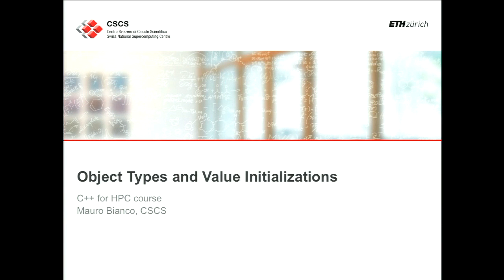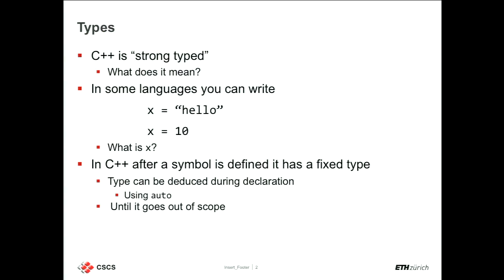C++11 introduced new ways of initializing values, but it's always been quite tricky how values are initialized in C++. We need to start a little bit earlier than that. C++ is called a strongly typed language. It means that every symbol at every given point in time during the execution of the program has a type associated to it — either a function or a variable.